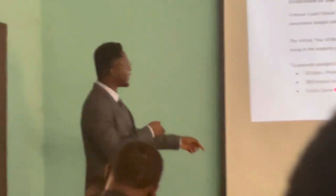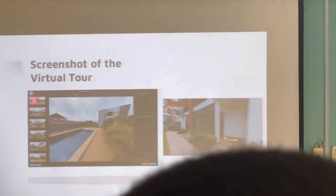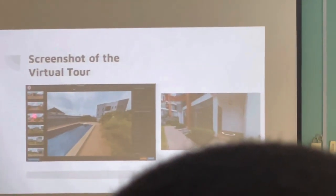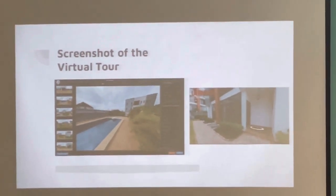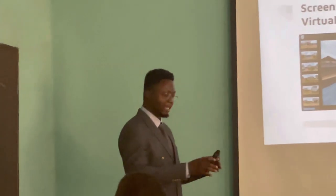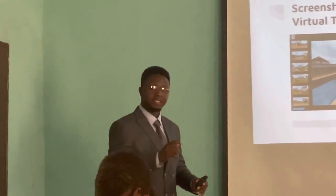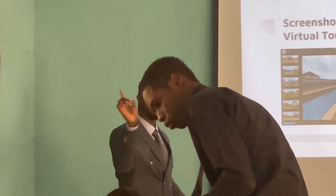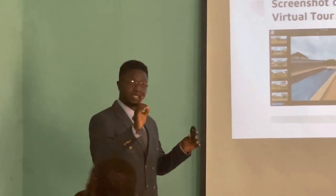Also using Oculus Quest 2 and PC. This is how the software looks like. Every single image you see here are 360 images. The idea is that you have a camera, you put a 360 lens on it, and once you take a picture, it captures every single thing around you.